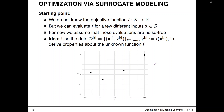Our scenario is: we have our objective function f, we can only evaluate it, we do not know its functional form, we can't really compute gradients on it. It's very often a computer program where we can define some inputs, wait some time, and then observe the numerical outcome. For now, I will assume that those evaluations are noise-free. Later on, we will talk about how to deal with noisy problems as well.